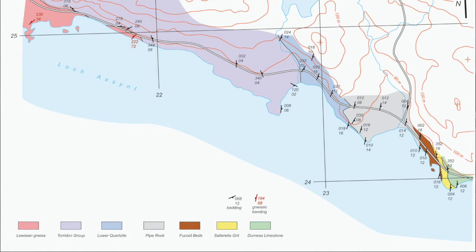The pink rocks are Lewisian gneisses. The purple in the middle is the Torridon Group rocks, and an outline that is a Cambrian succession that simply dips down to the southeast. To set the scene, let's introduce the rocks along the section, starting with the oldest off in the west.